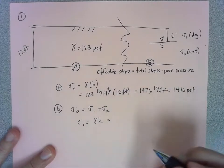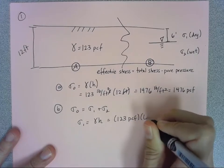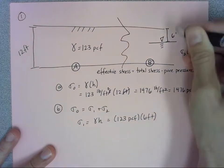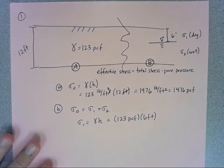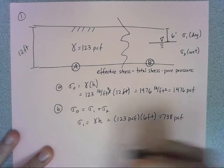Which is just this time 123 pounds per cubic foot times six feet because I'm just going halfway down. That's the only part that's dry, is halfway down that, and that's 738 pounds per square foot.